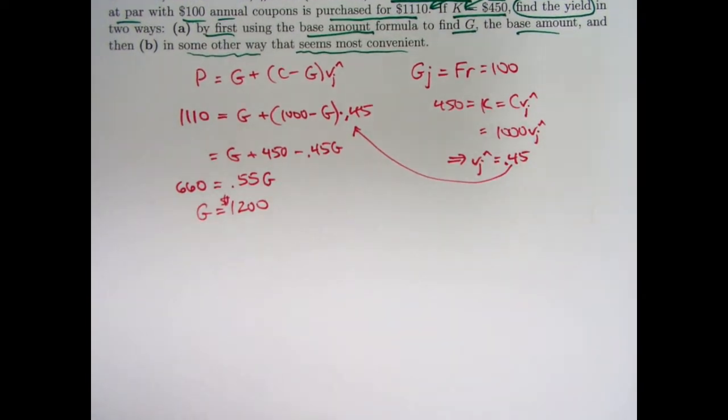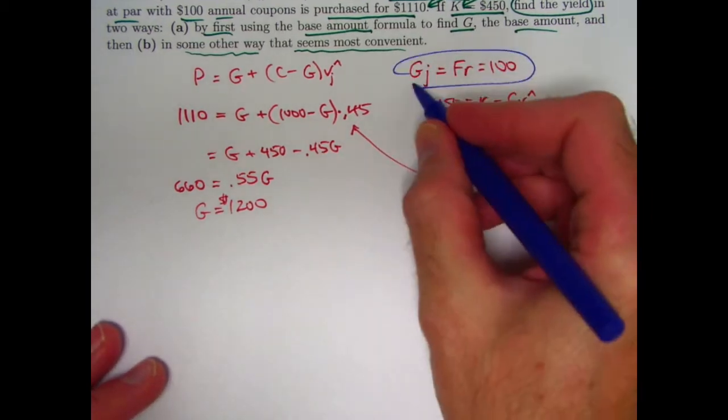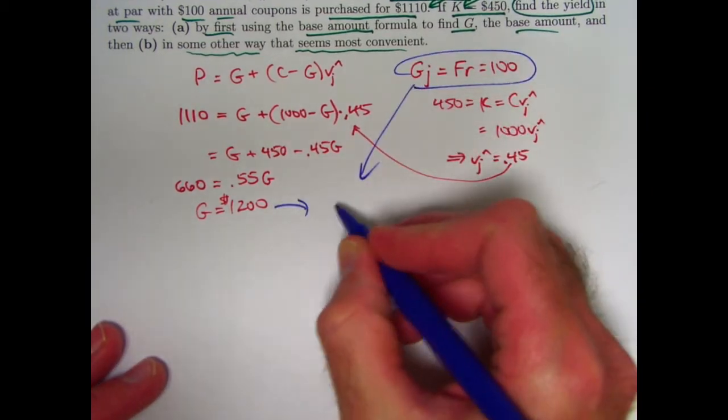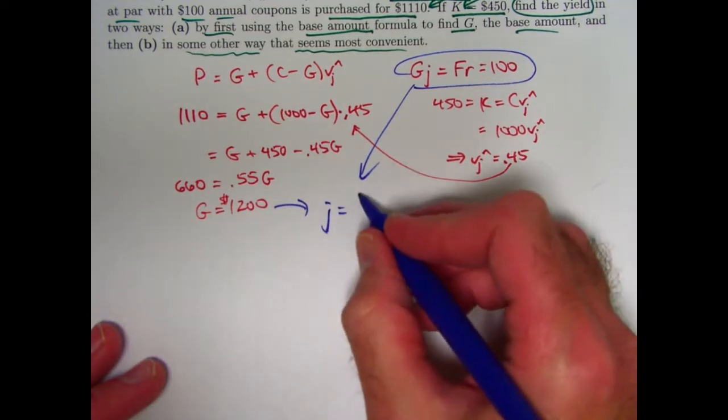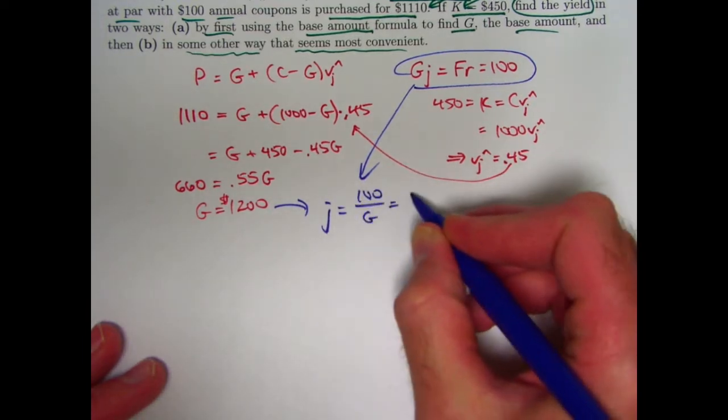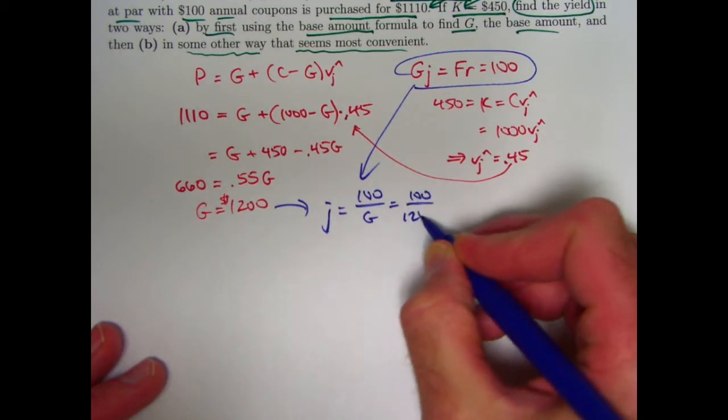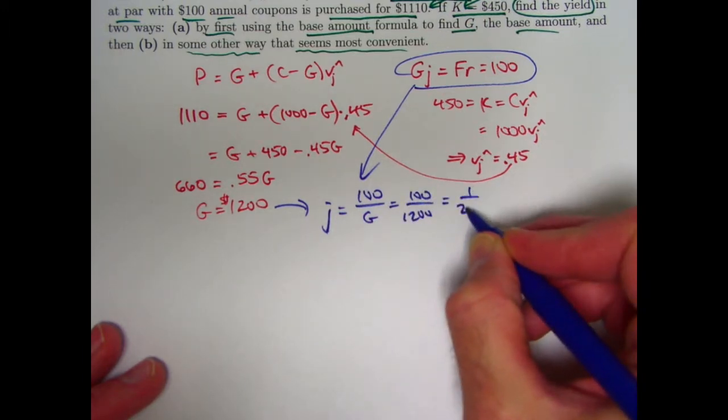Now we can use the equality up here to find the answer. J, the effective annual yield rate in this case is going to be 100 divided by capital G, 100 divided by 1,200, same as 1/12.